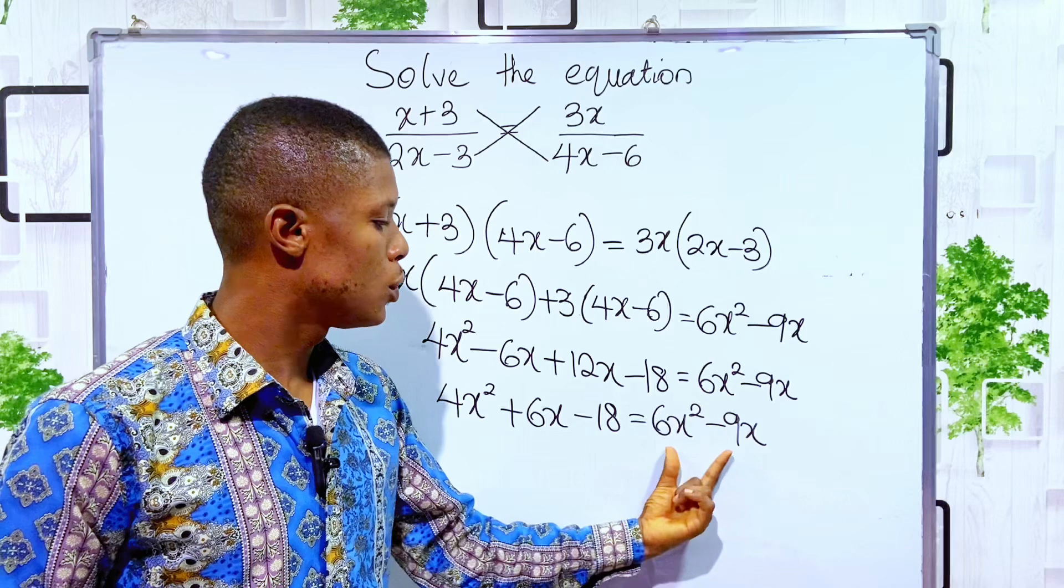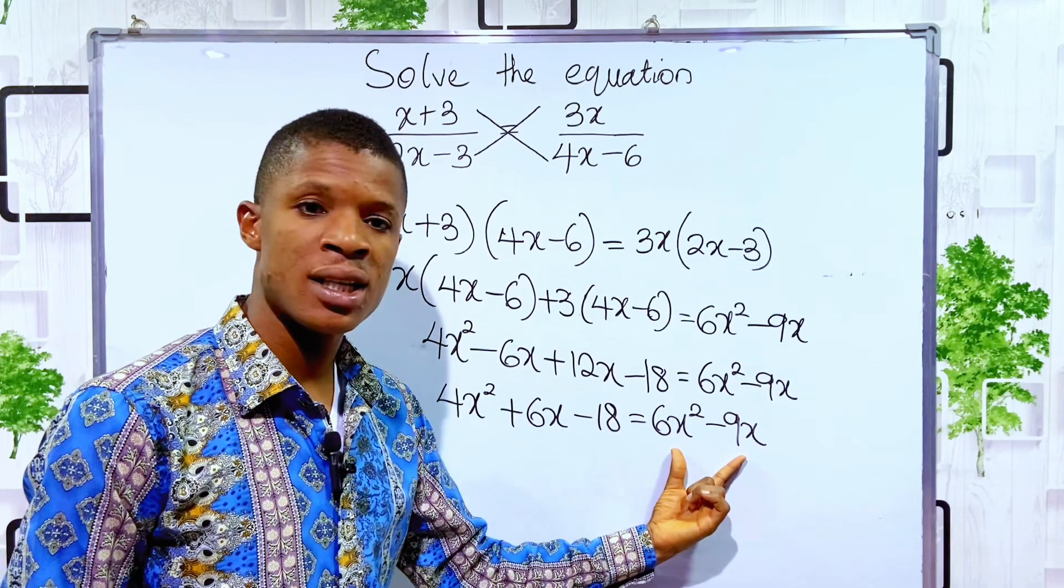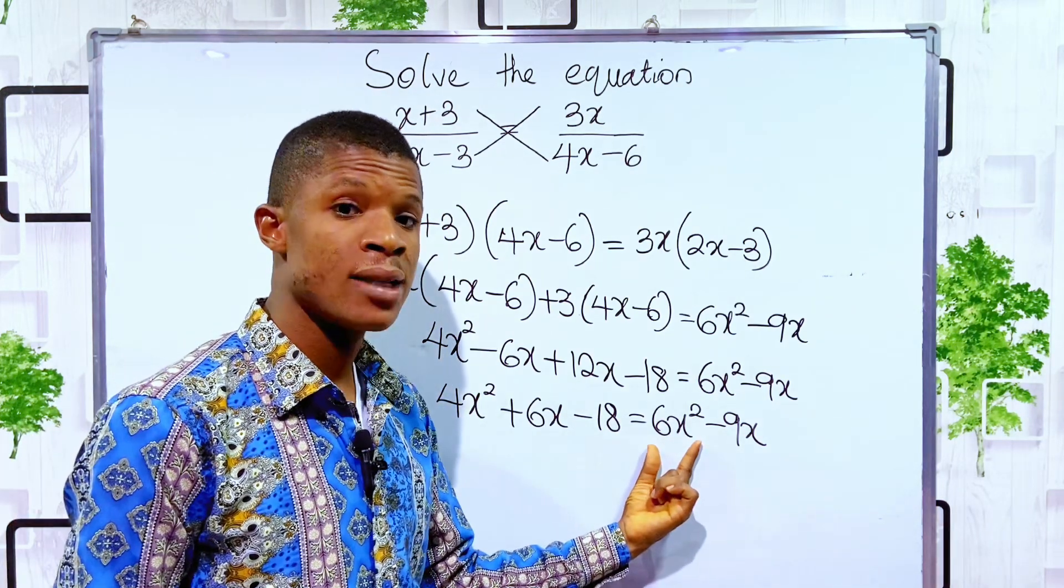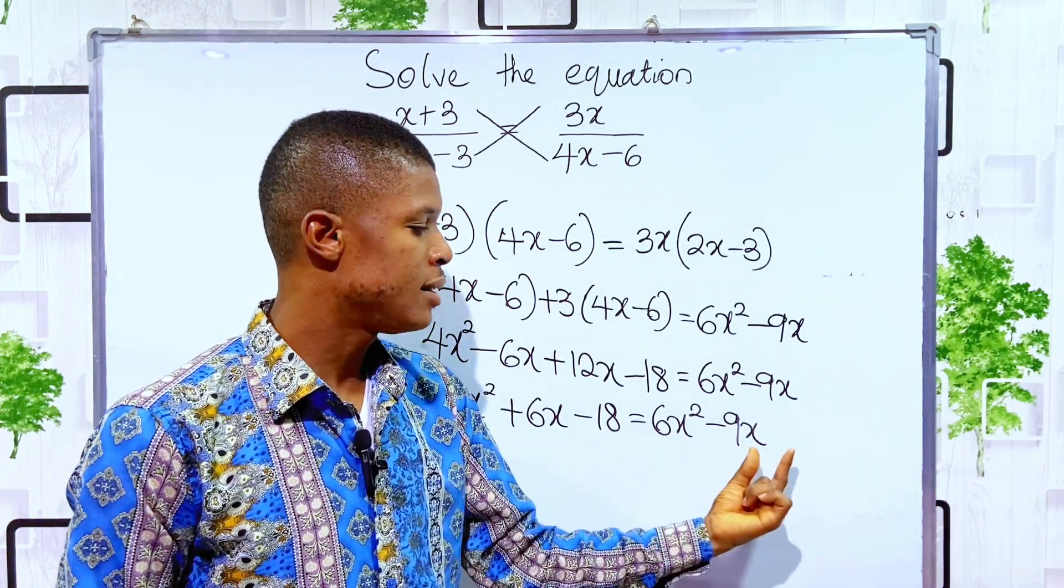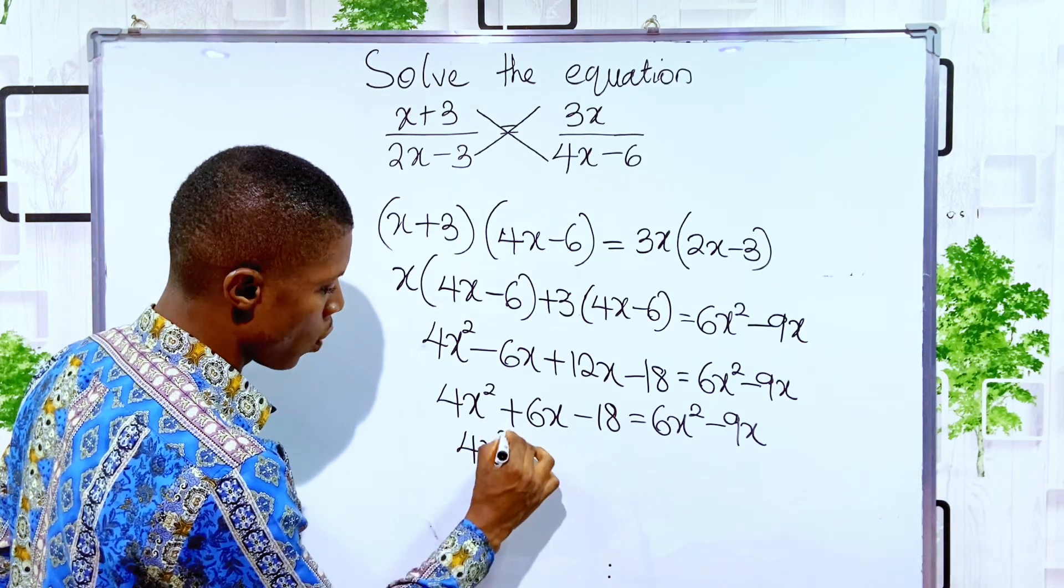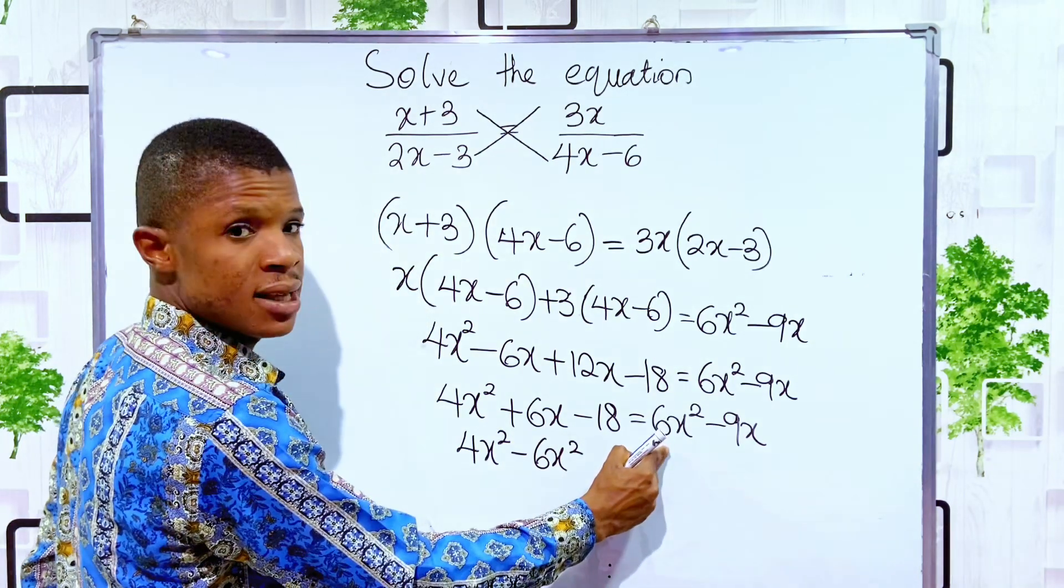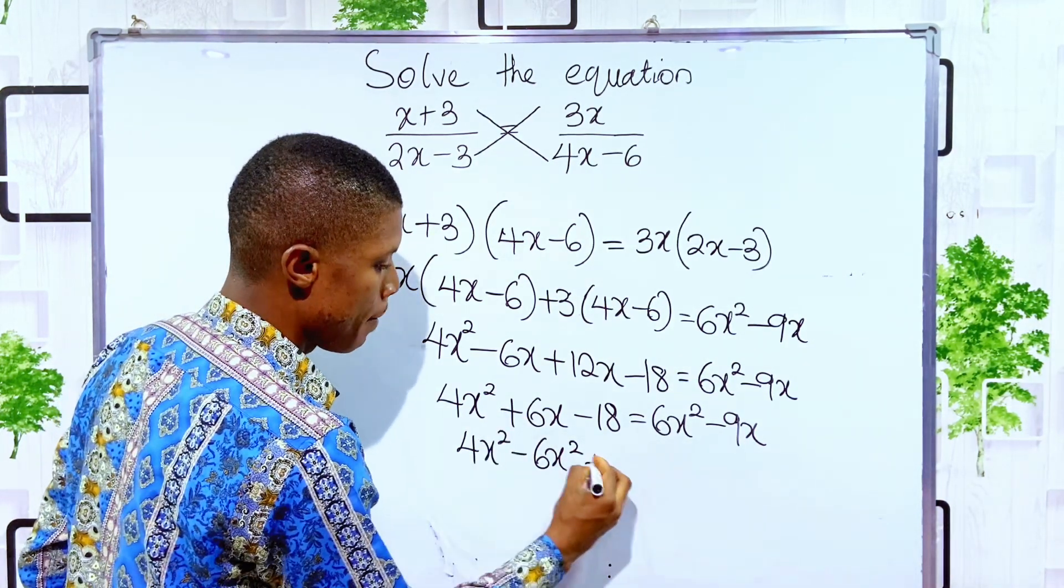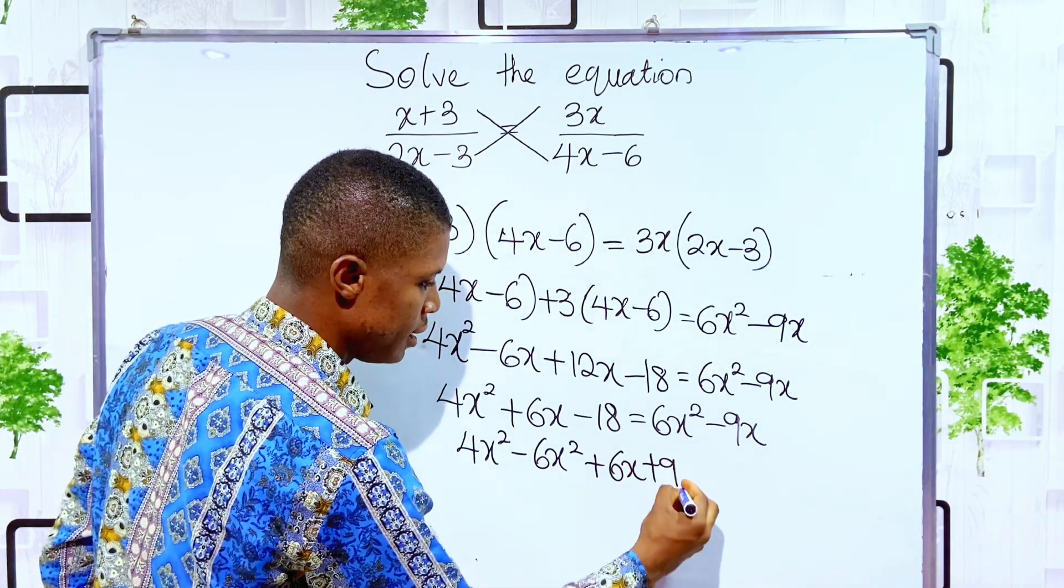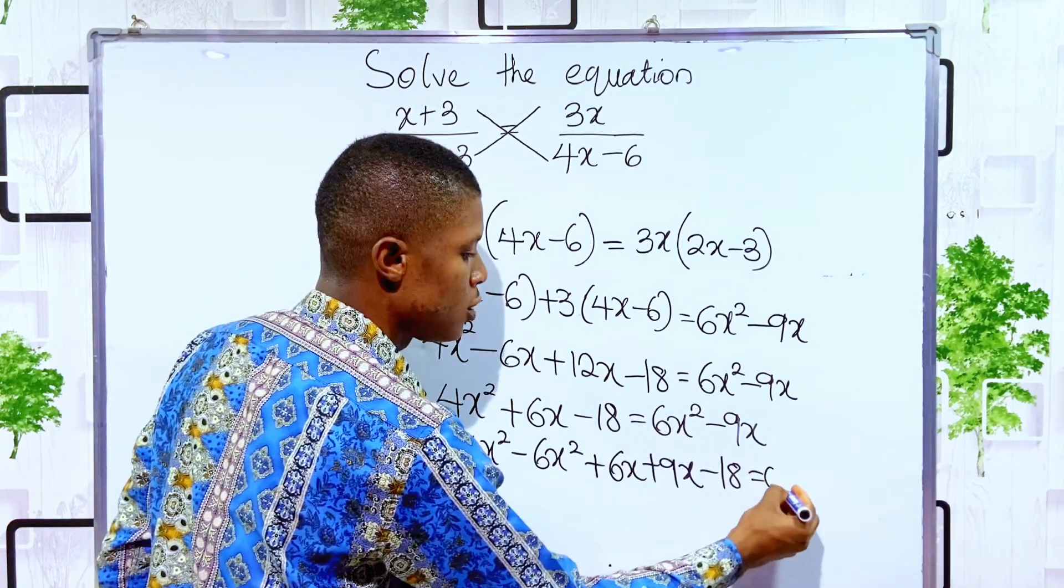The next thing we are going to do, we have 6x squared here, we have 4x squared here. So we have to bring all this thing in the right-hand side back to the left-hand side. To do that, we minus 6x squared from the right-hand side and add 9x to the left-hand side. So we have it as 4x squared minus 6x squared. The next term is plus 6x. We will now add 9x to both sides plus 9x minus 18. There is nothing remaining here. So we have it to be 0.